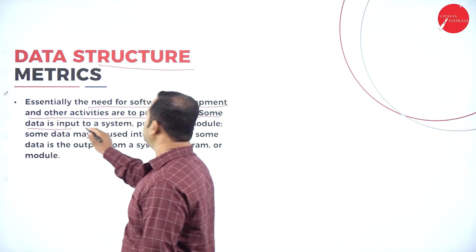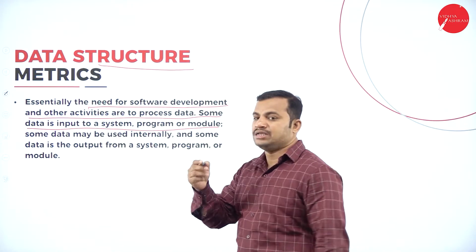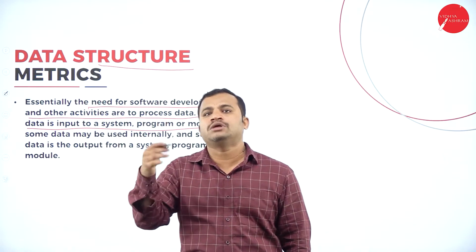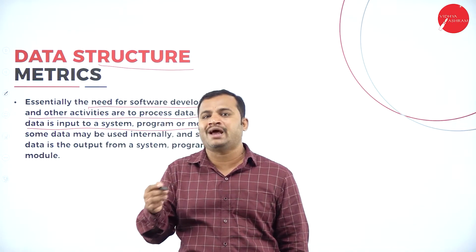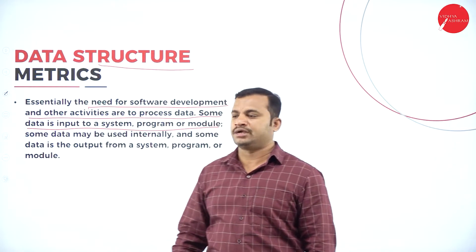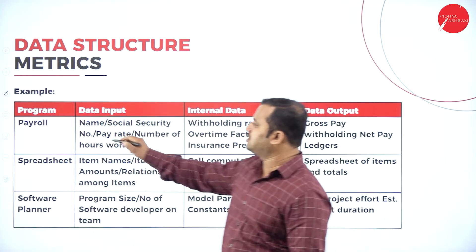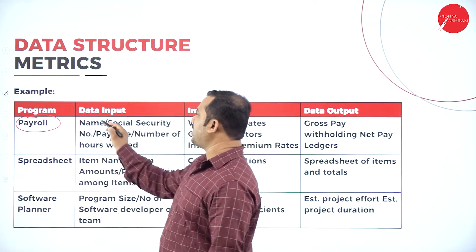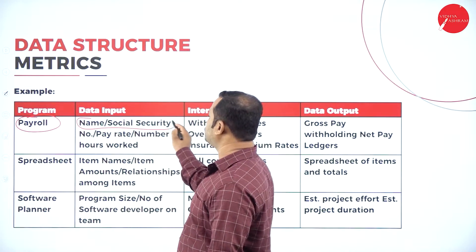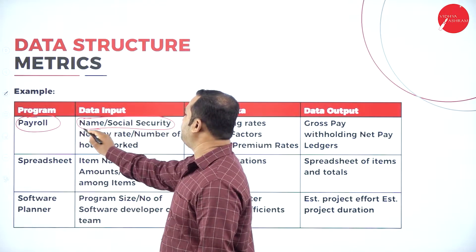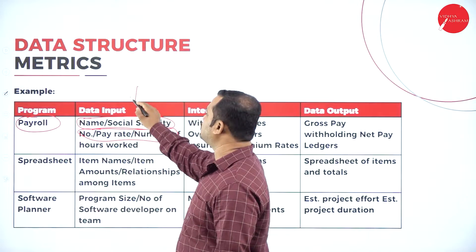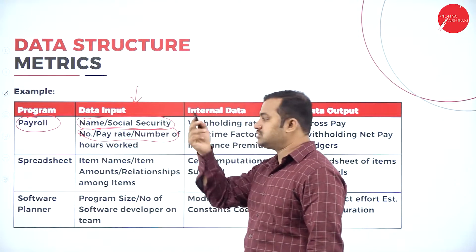That is the essential data item given as input to the system, the output produced after processing takes place within a system, and how the processing is going to be computed and the output data is generated. This is the payroll program example. We have the data input: the names, social security number, pay rate, and number of hours worked. All these are the inputs given by the user to the system.